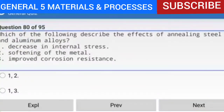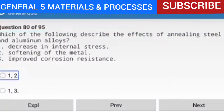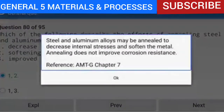Question 80 of 95: Which of the following describe the effects of annealing steel and aluminum alloys? Options: 1. Decrease in internal stress. 2. Softening of the metal. 3. Improved corrosion resistance. The answer is 1 and 2 only. Steel and aluminum alloys may be annealed to decrease internal stresses and soften the metal. Annealing does not improve corrosion resistance.